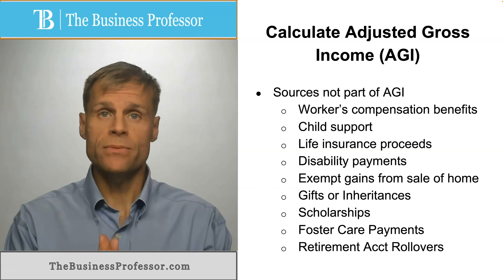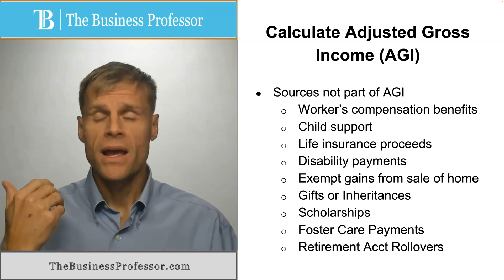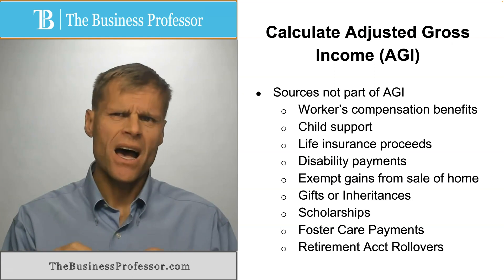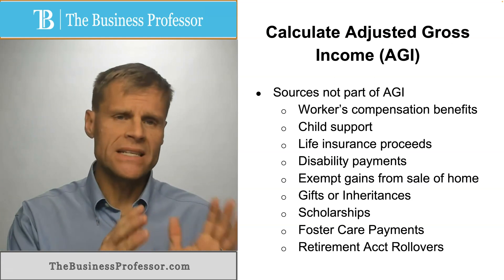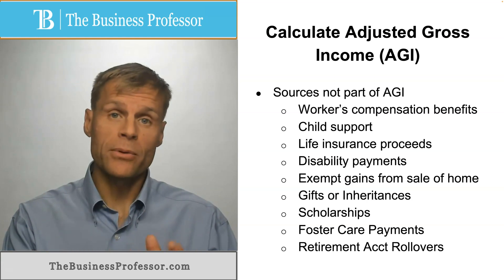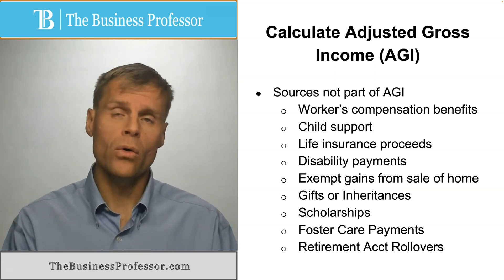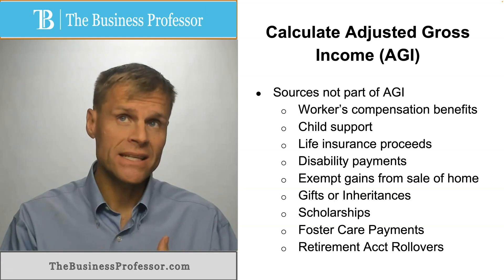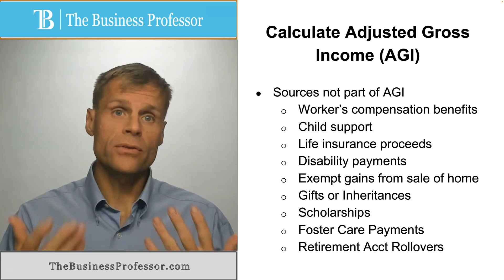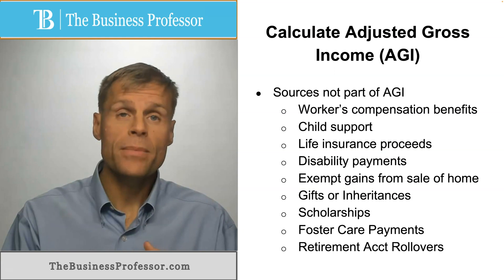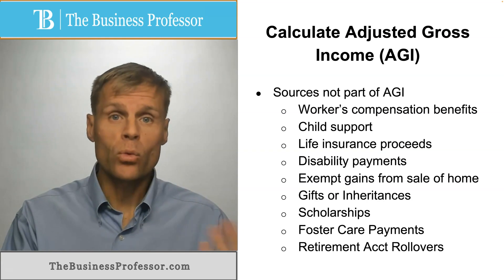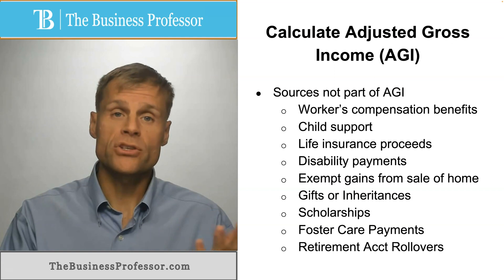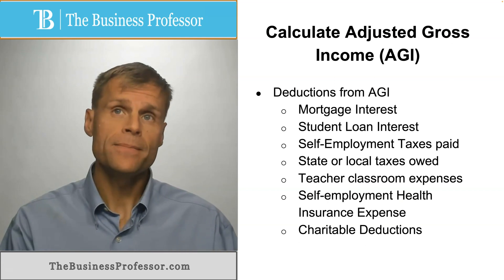What are some sources of income that are not included in your AGI? These are some examples: workers' compensation benefits, child support, life insurance proceeds, disability payments, certain exemptions from capital gains such as the sale of your personal home, scholarships, gifts or inheritance, foster care payments, and retirement account rollovers that meet the qualifications for such a rollover would be exempted.